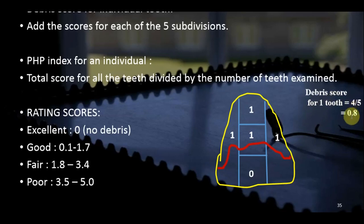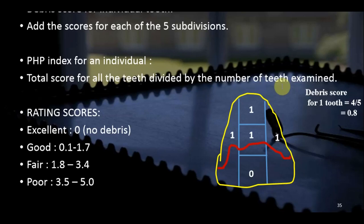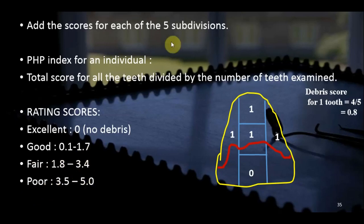The PHP index for an individual is calculated by adding up all tooth scores and dividing by the number of teeth examined. Interpretation: Excellent = 0; Good = 0.1 to 1.7; Fair = 1.8 to 3.4; Poor = 3.5 to 5. PHP is similar to OHI-S in that both have good/fair/poor categories, but OHI-S checks debris and calculus while PHP checks plaque and debris.